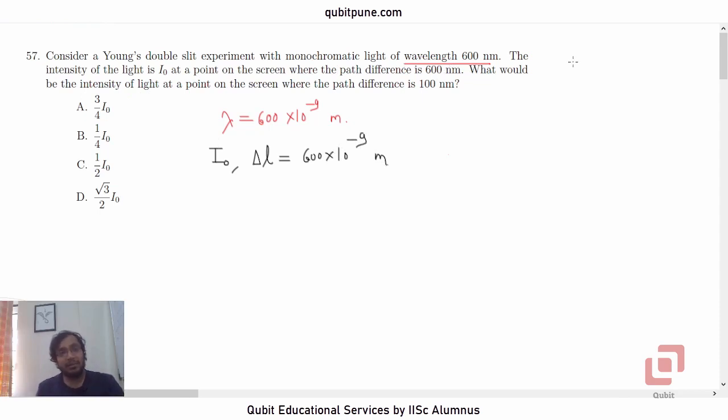What would be the intensity of the light at a point on the screen where the path difference is 100 nanometers? We need to detect or calculate the intensity at a point where the path difference is 100 nanometers, 100 into 10 raised to negative 9 meters. Now there are two formulas which you should know from the Young's double slit experiment to solve the problem.